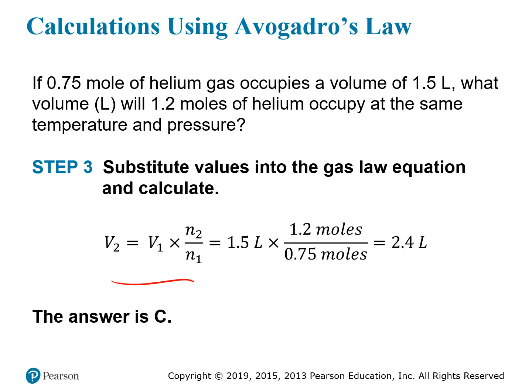Once we have the expression, it's just a matter of plugging in the values: 1.5 liters for the initial volume, 0.75 moles for the initial number of moles, and 1.2 moles for N2. The moles unit cancels, leaving us with a liters unit, and the final answer is 2.4 liters. So the answer was C.